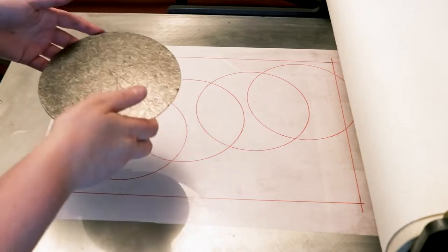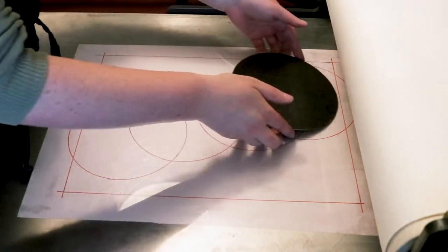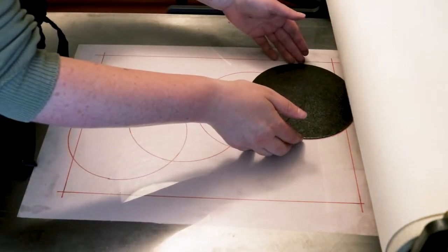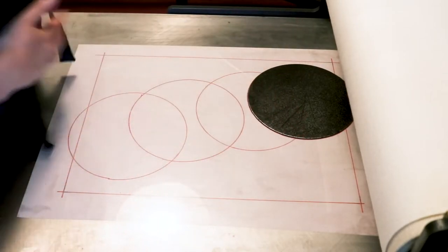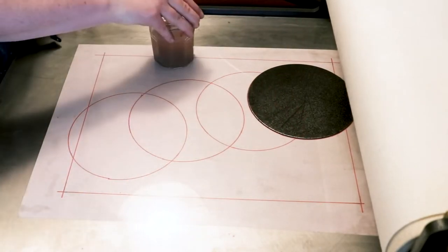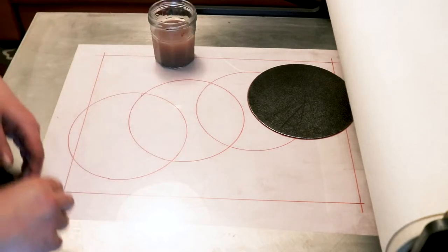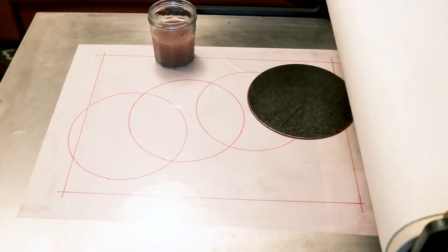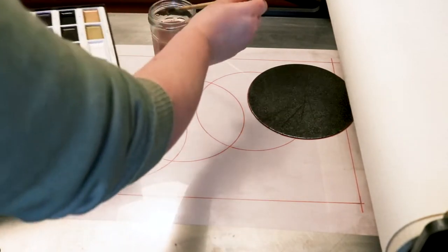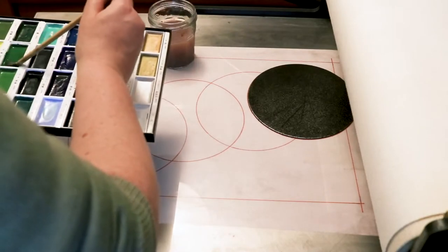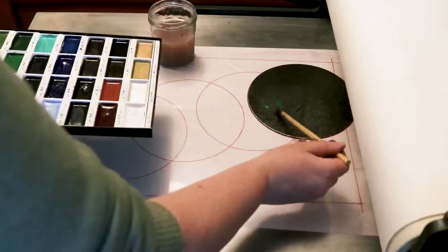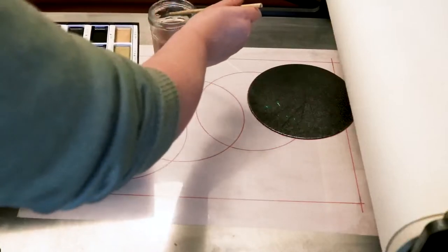When your plate is inked up and ready to print, you place it on the press bed and lay down your sheet of damp paper and the pressure from the roller pushes the damp paper into the grooves of your plate where it picks up the ink. If you try and print with dry paper, it won't be flexible enough to get into the grooves of the plate. The blankets on the press help transfer the pressure from the roller evenly across your plate.